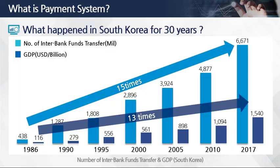Let's see what happened in South Korea. In 1986, the interbank retail payments system was launched. Since then, over 30 years, the GDP of South Korea increased 13 times. During the same period, the number of interbank fund transfers increased 15 times. This shows a very close relationship between payment system and economic growth, meaning payment system makes a great contribution to economic growth.